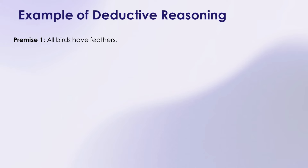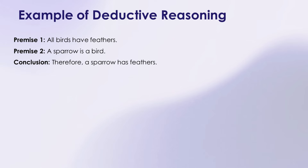Let's break it down with some examples to make it clearer. Consider the statement: Premise 1 — all birds have feathers. Premise 2 — a sparrow is a bird. Conclusion — therefore, a sparrow has feathers. Simple, right? It's a logical chain of thought that starts broad and gets specific.